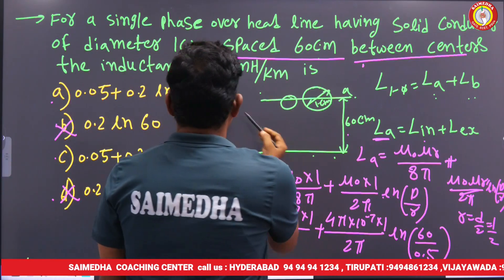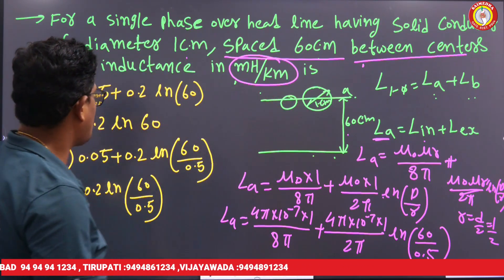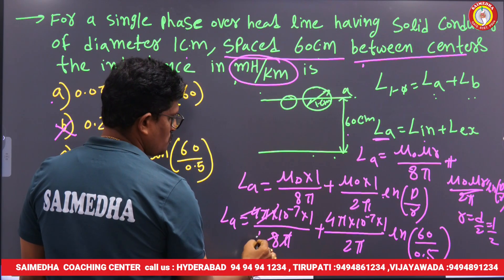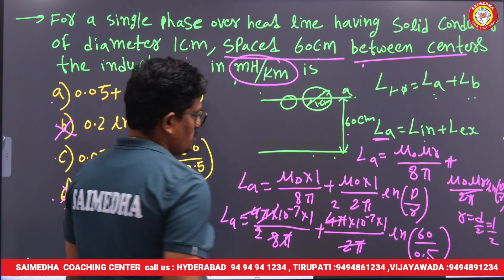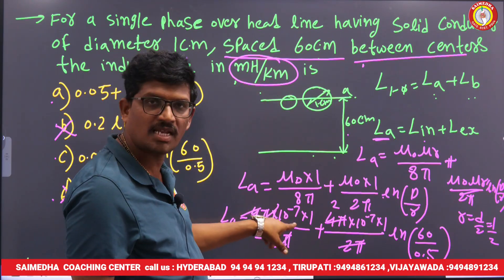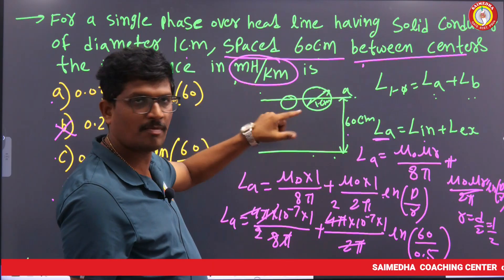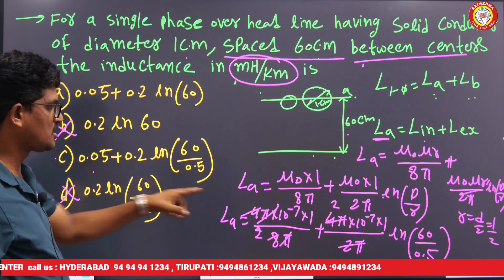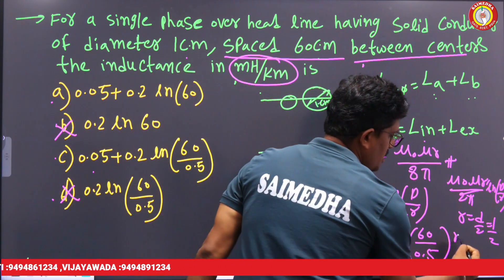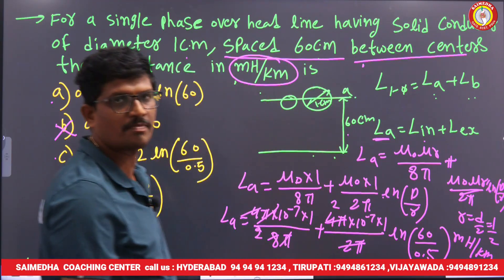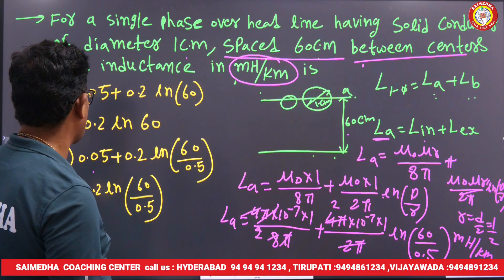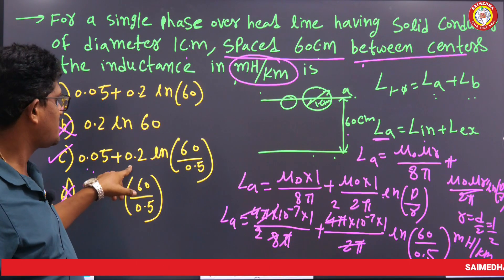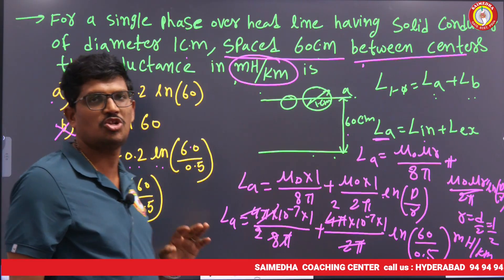We need the answer in millihenry per kilometer. After cancelling π terms and simplifying, the internal inductance term gives 0.05 mH/km and the external term gives 0.2 · ln(60/0.5) mH/km. So the final answer is La = 0.05 + 0.2 · ln(60/0.5) millihenry per kilometer. This is a typical GATE power system question.